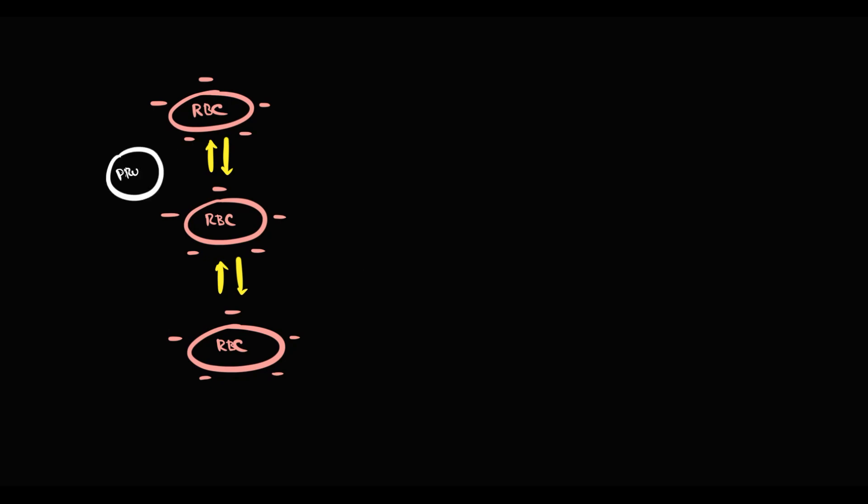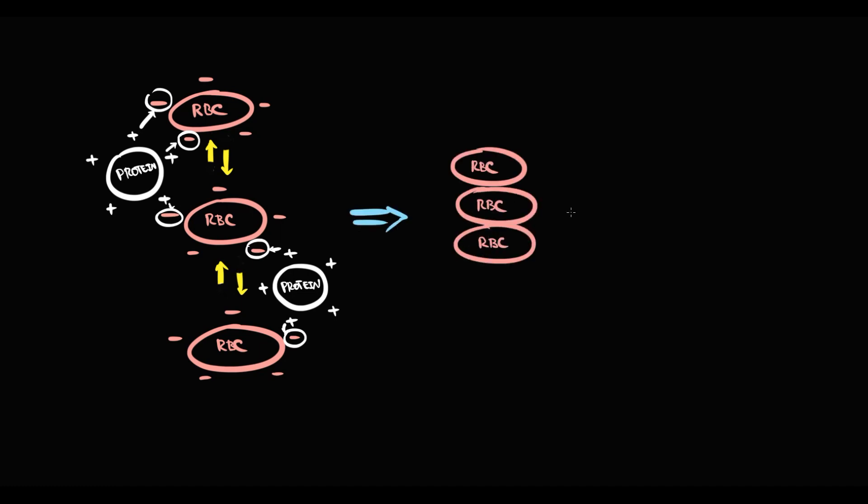But most proteins in our blood have positive charge due to the amino groups. And this positive charge on plasma proteins can diminish or even neutralize the negative charges on the surface of red blood cells. And now red blood cells are more prone to stick to each other. And eventually, this causes formation of a stack of red blood cells that resembles a stack of coins, a phenomenon called rouleaux formation.